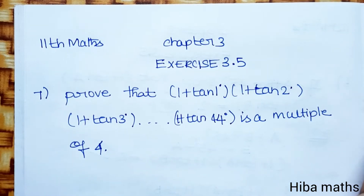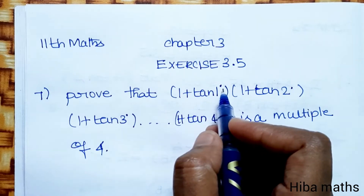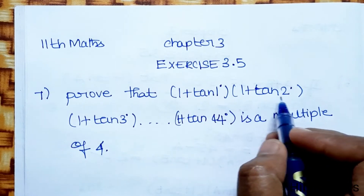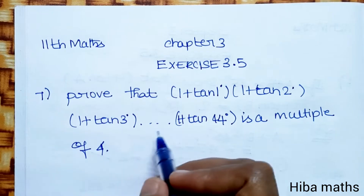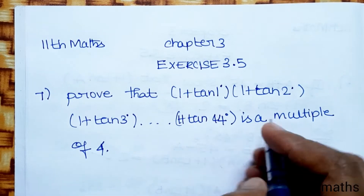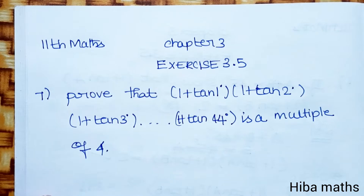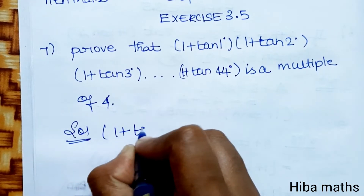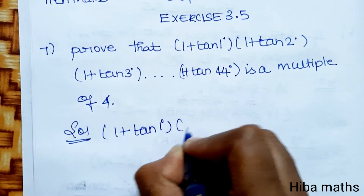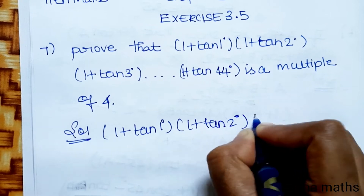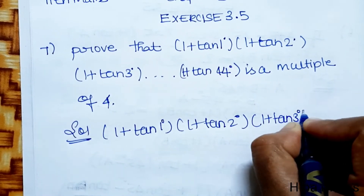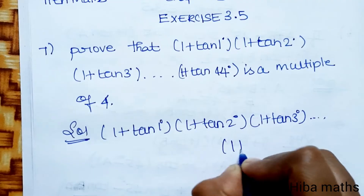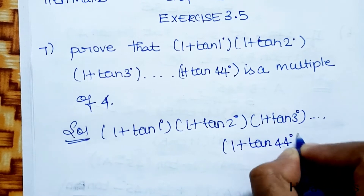Hello students, welcome to Hibamax 11th standard math, Chapter 3, Exercise 3.5, 7th question. We need to prove that (1 + tan 1°)(1 + tan 2°)(1 + tan 3°)... up to (1 + tan 44°) is a multiple of 4. This is what we will prove in the solution. The given expression is (1 + tan 1°)(1 + tan 2°)(1 + tan 3°) up to (1 + tan 44°).